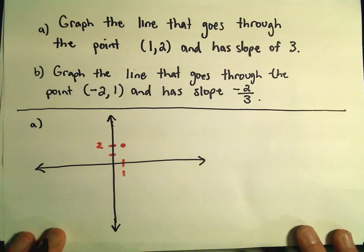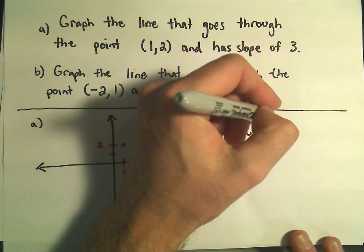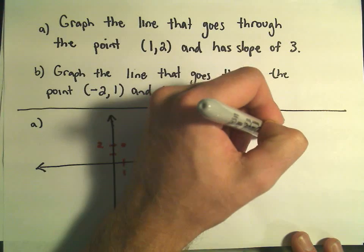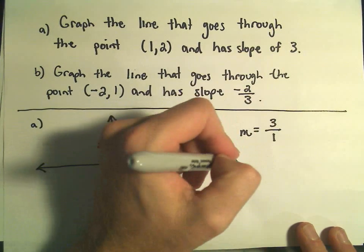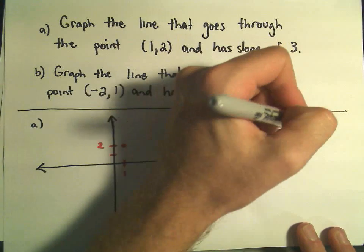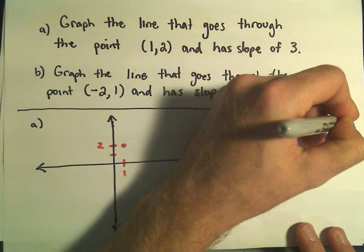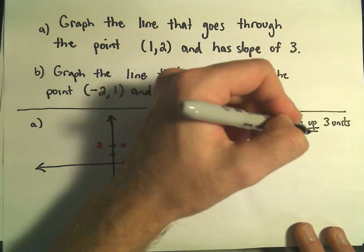So if this line has a slope of 3, well, I'm kind of thinking in my head, I can write 3 as a fraction, as 3 over 1. And again, what the numerator to me says, basically go up 3 units, because that's the change in Y. And since it's positive, positive to me says go up.